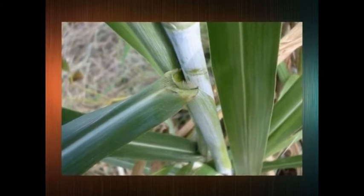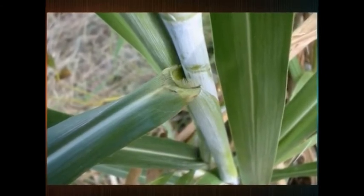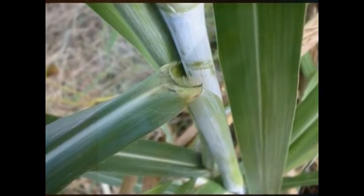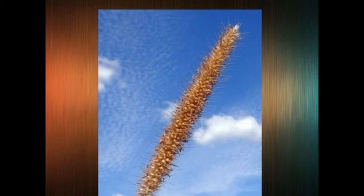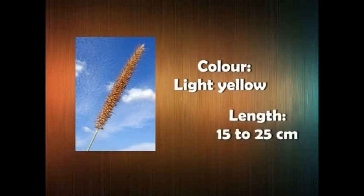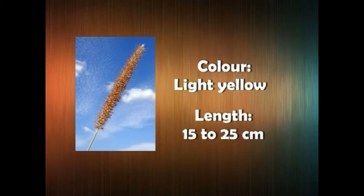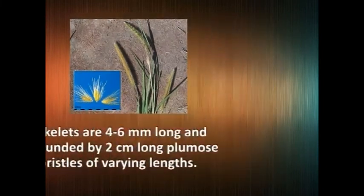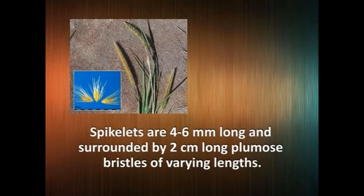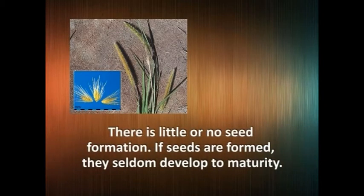The leaf sheath clasps the stem and is generally smooth and sometimes hairy. The inflorescence is an erect cylindrical spike, light yellow in color and about 15 to 25 cm long. The spikelets are 4 to 6 mm long and surrounded by 2 cm long plumose bristles of varying length. There is little or no seed formation. If seeds are formed, they seldom develop to maturity.